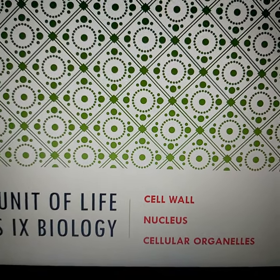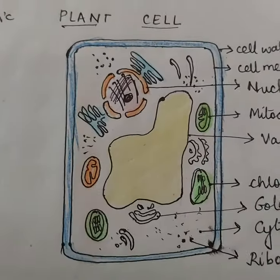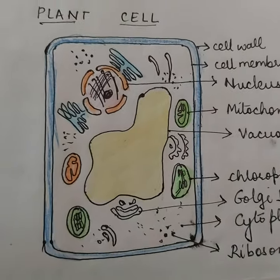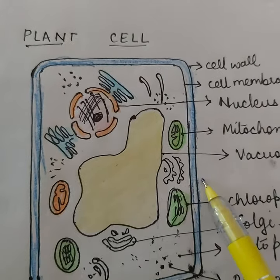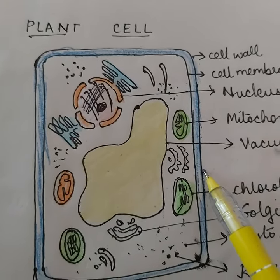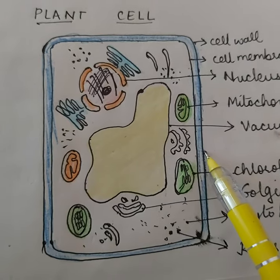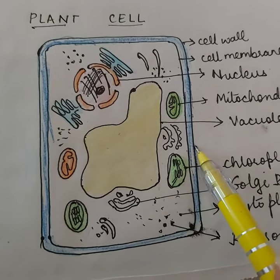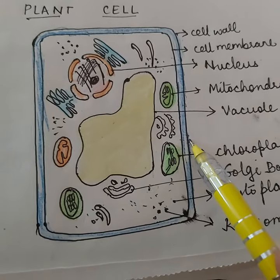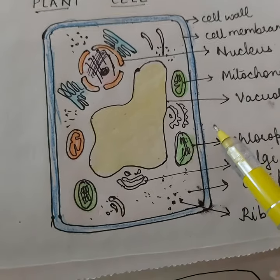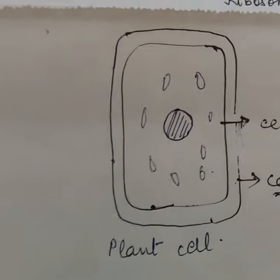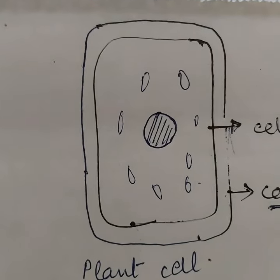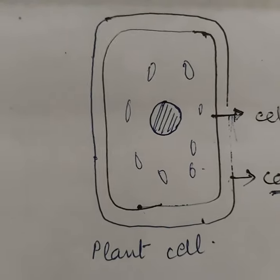Now first we will begin with the cell wall. Children, all of you know that in plant cells there is an additional layer covering the cell membrane. This additional layer that covers the cell membrane is called the cell wall. This cell wall is a very characteristic feature in plant cells, in fungal cells and bacterial cells because they possess an additional layer covering the cell membrane.